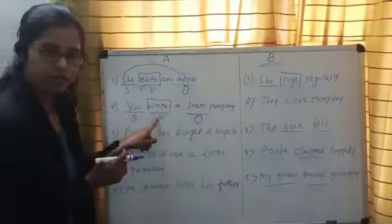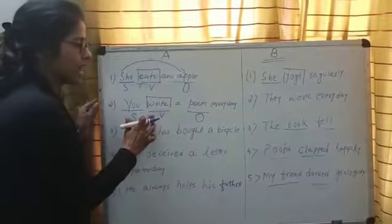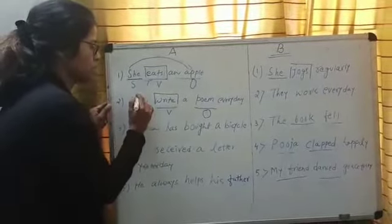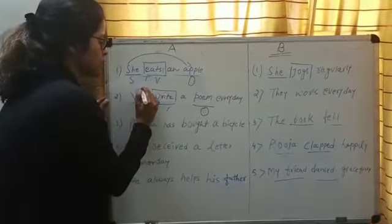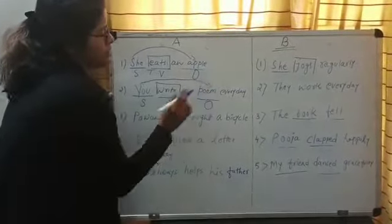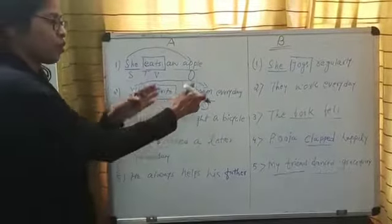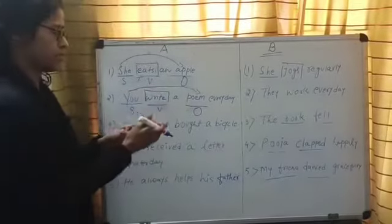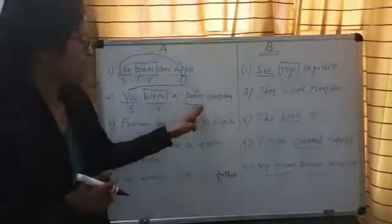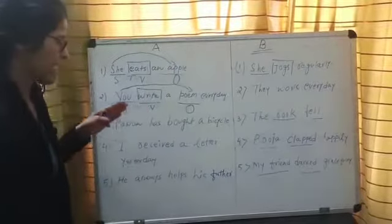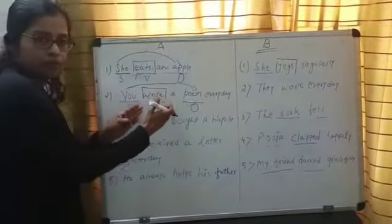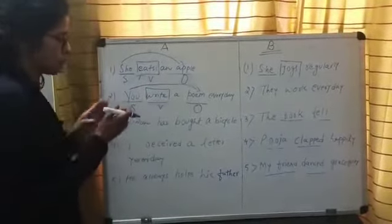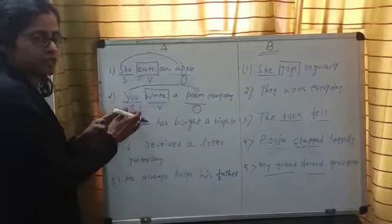Similarly, the second example: 'write' is a verb here, and 'write' has a direct object to receive the action performed by the subject. 'You' is the subject, performing the action of writing, and the object receiving that action is the poem. So poem is the object, write is the verb, and you is the subject. Again, the verb 'write' has a direct object to receive the action performed by the subject.